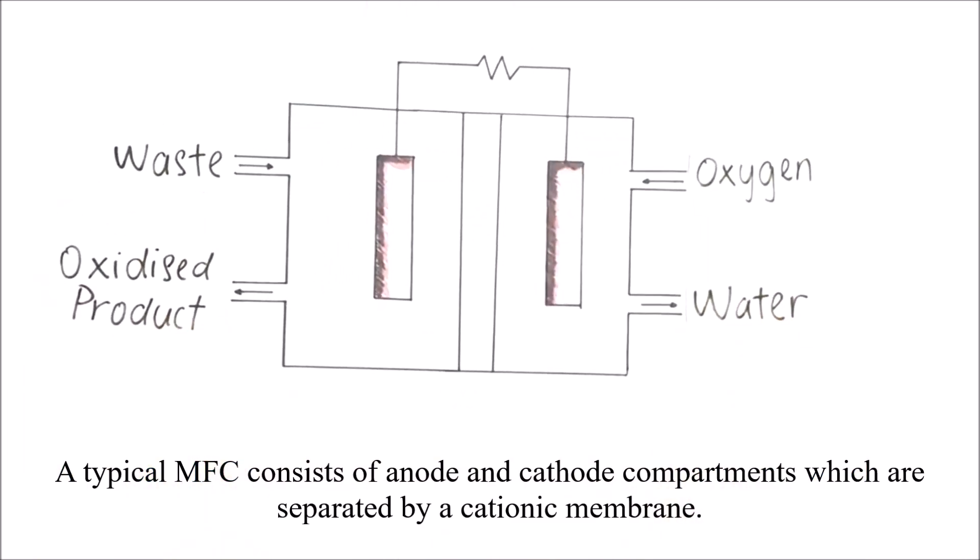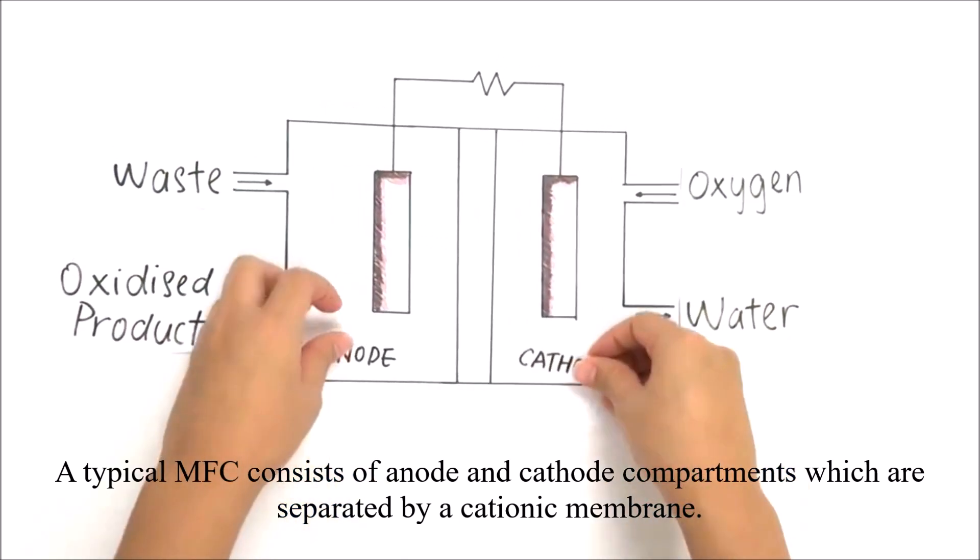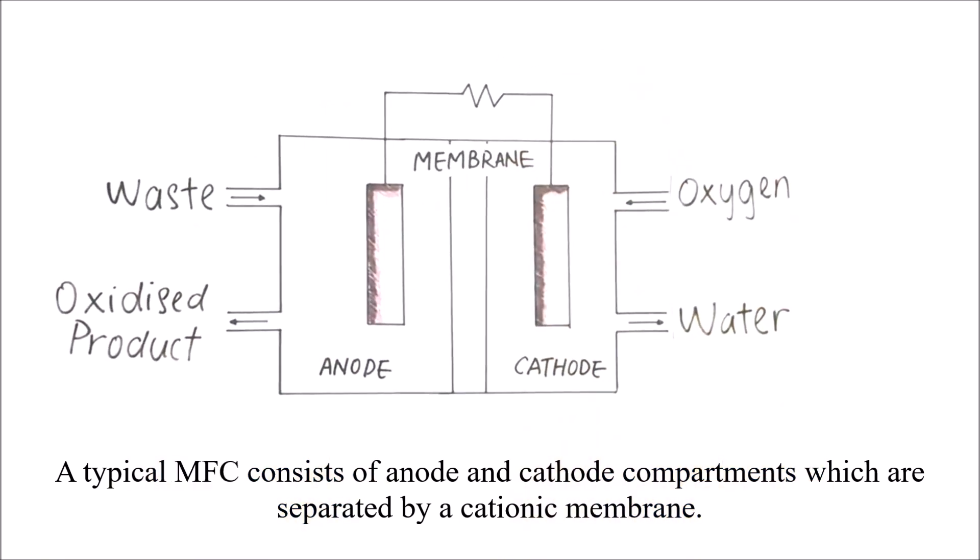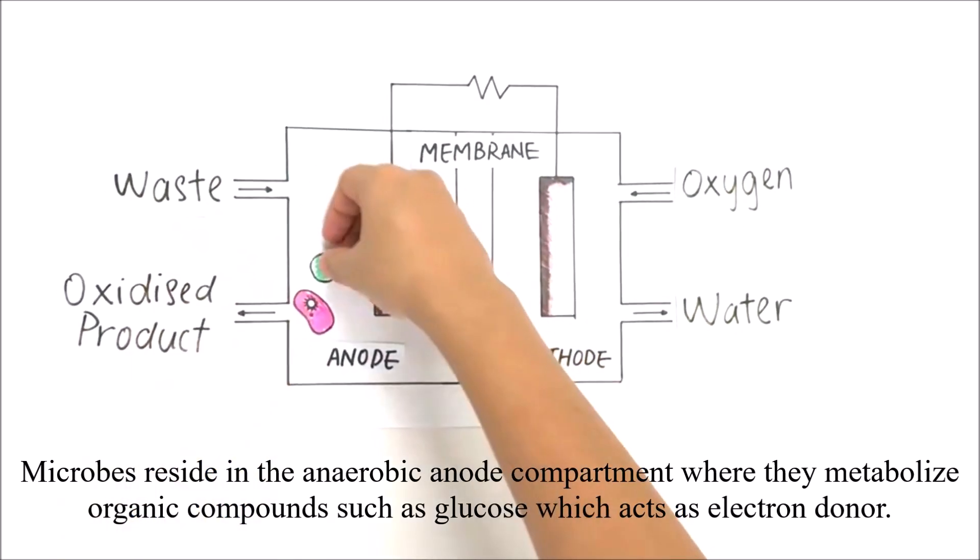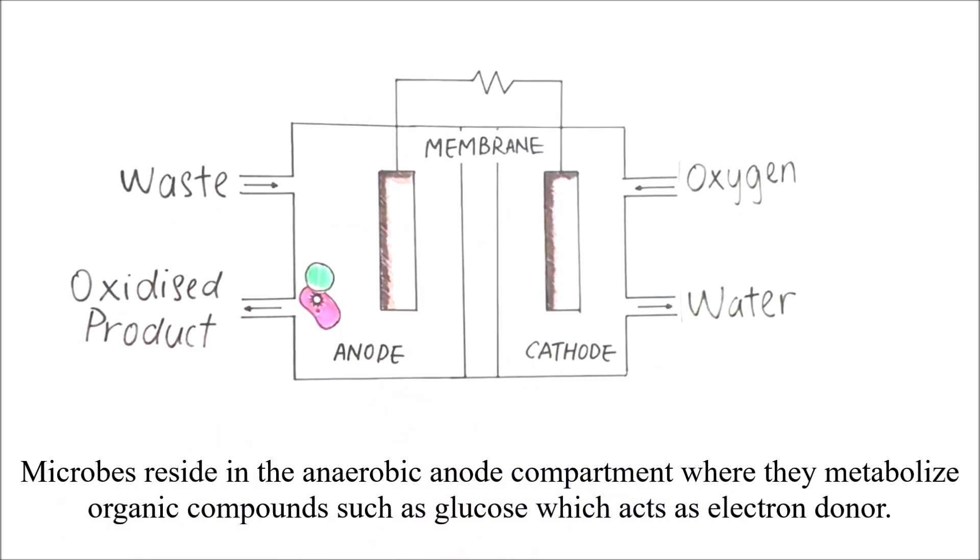A typical MFC consists of anode and cathode compartments which are separated by a cationic membrane. Microbial cells reside in the anaerobic anode compartment where they metabolize organic compounds such as glucose which acts as electron donor.